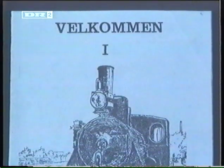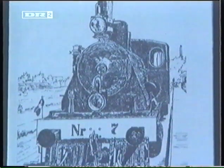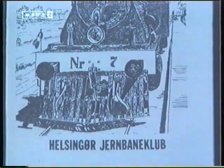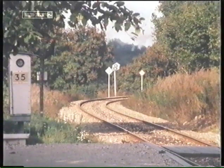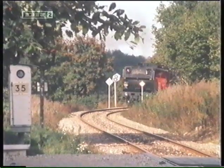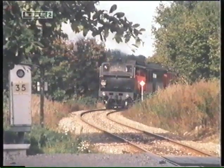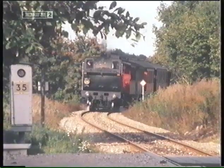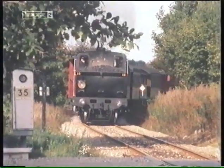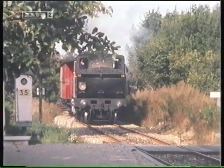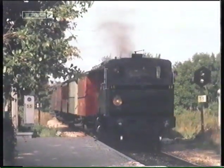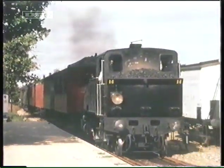Lad os forlade de stillestående vogne i Odense og selv tage ud med gammelt materiel - denne gang i Nordsjælland. Klokken er 8 søndag morgen på Soundestation mellem Helsingør og Hornbæk, og her kommer Helsingør Jernbaneklubs veterantog. Der skal omrangeres og samles før dagens to dobbelture fra Helsingør til Gilleleje.